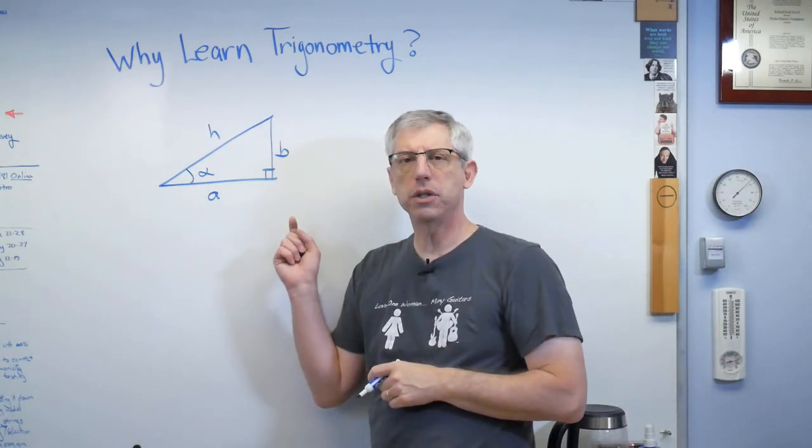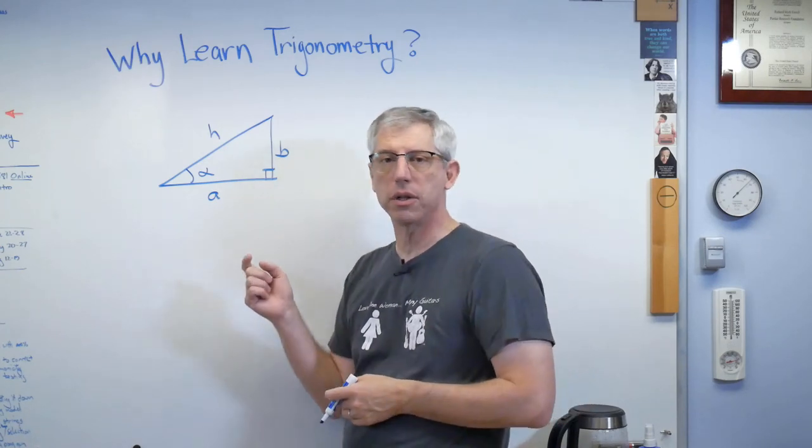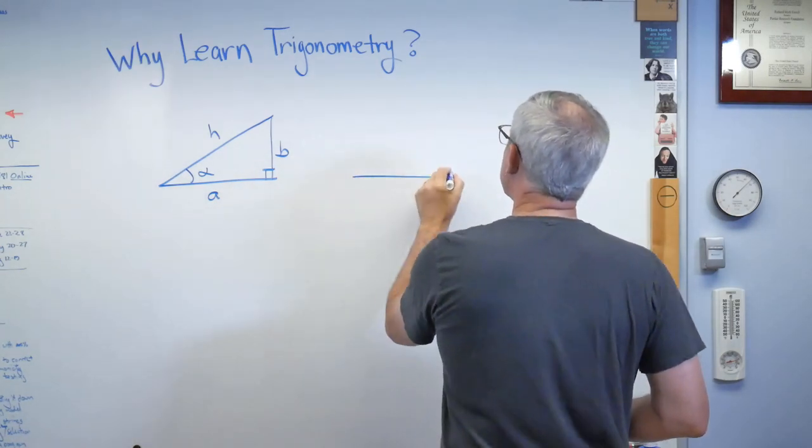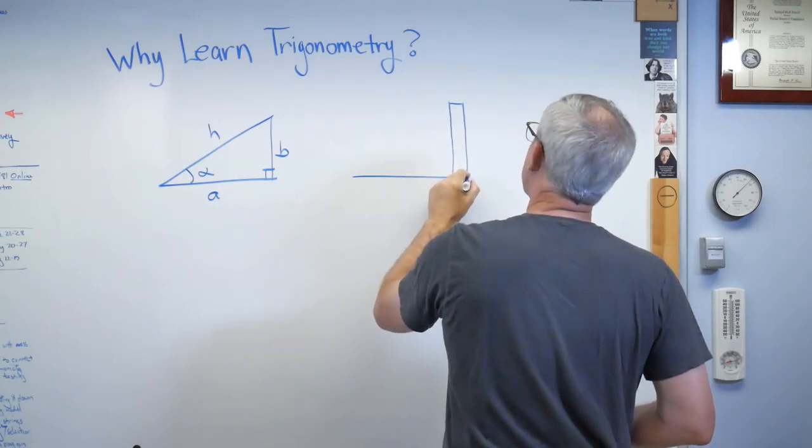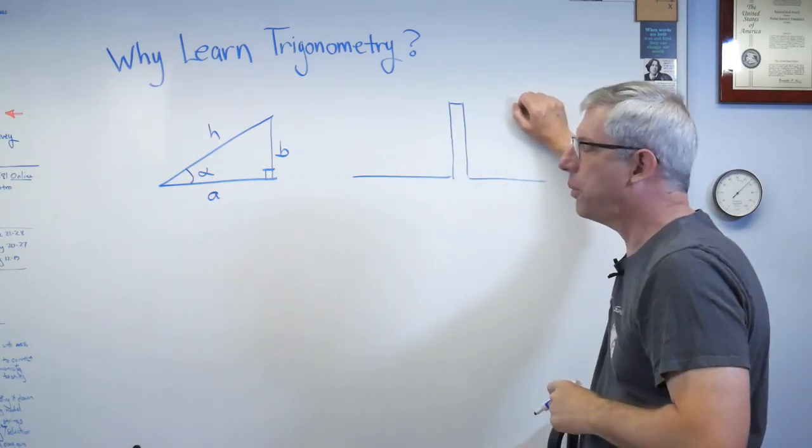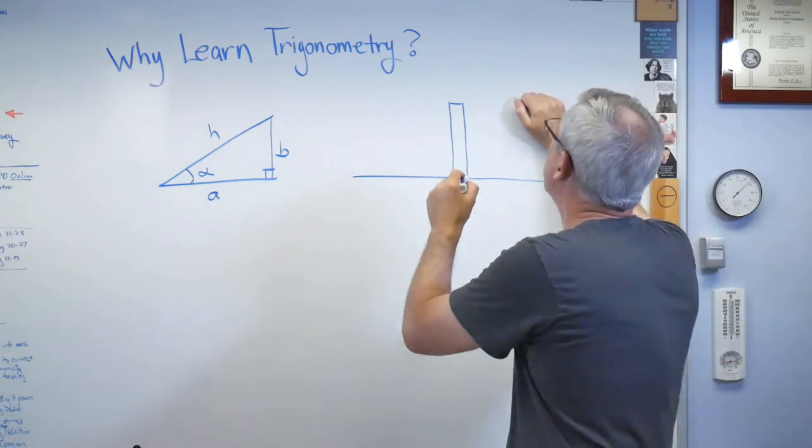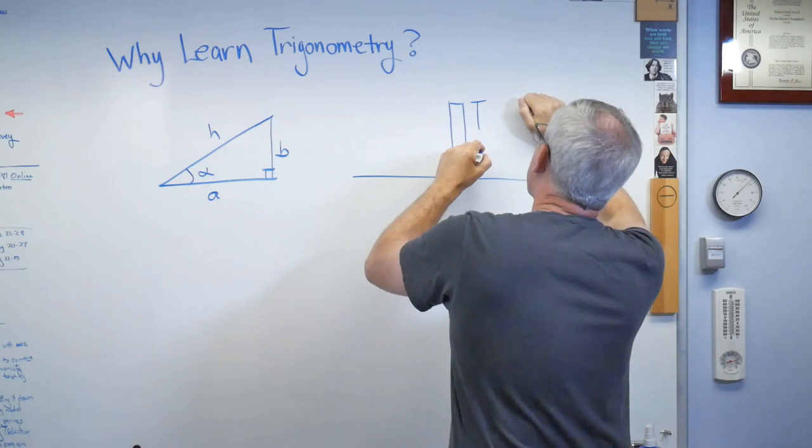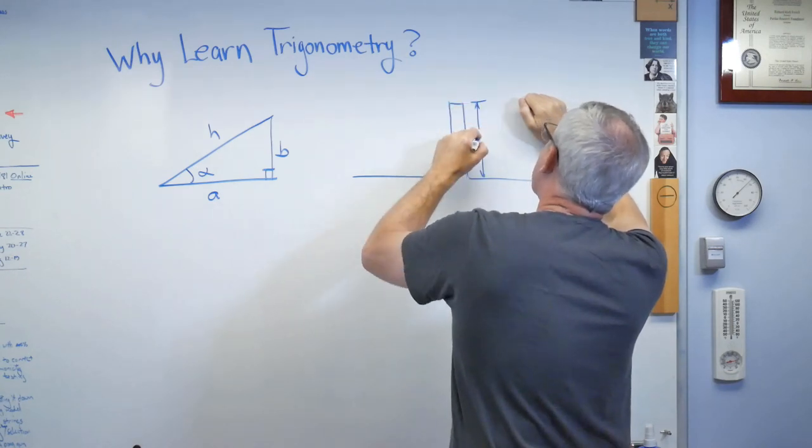And it turns out the relationships are true no matter what size the triangle is. So, if I want to know how tall something is, and I don't want to go measure it. Maybe there's a tree or a post or a building or something, and I want to know how tall it is. Well, that's the height. What do we want to call that? Let's call that Y. We need a letter.